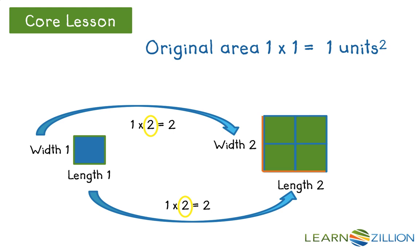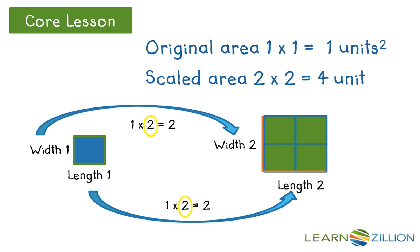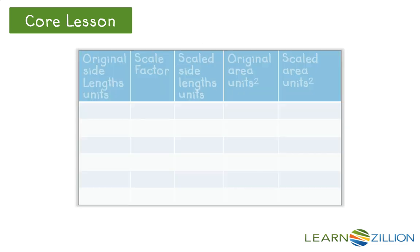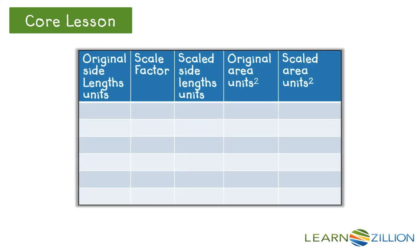As you can see, multiplying the original area by the scale factor does not generate the scaled area. You can see the scaled area is 4 square units by counting the units in the scale drawing. Let's put this in a table and see if we can recognize any patterns as we learn to generate scale area from scaled dimensions. Original side lengths: 1 by 1 units, scale factor: 2, scaled side lengths: 2 by 2 units, original area: 1 square unit, scaled area: 4 square units.